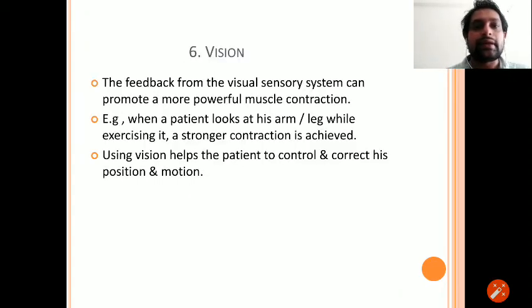Let's start with vision. Vision, that means the feedback from the visual sensory system can promote a more powerful muscle contraction. For example, when a patient looks at his arm or leg while exercising it, a stronger contraction is achieved.